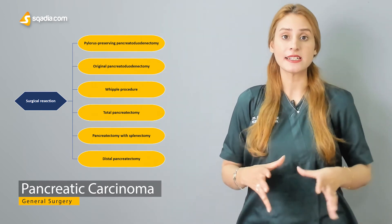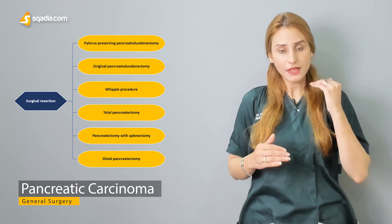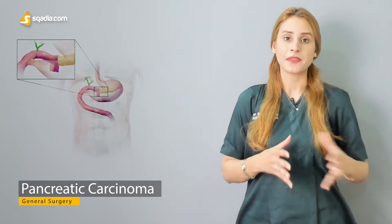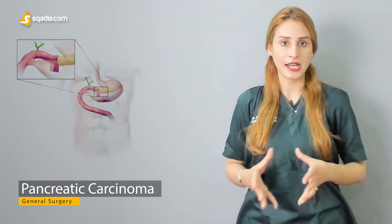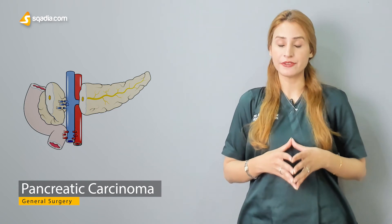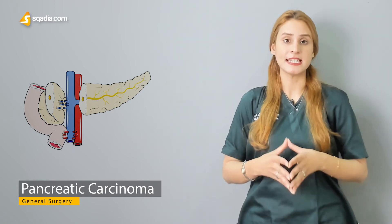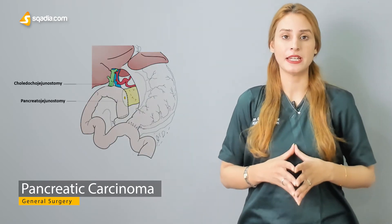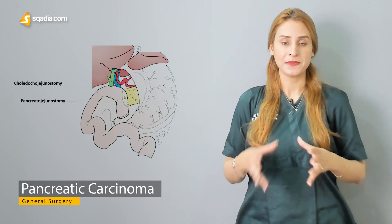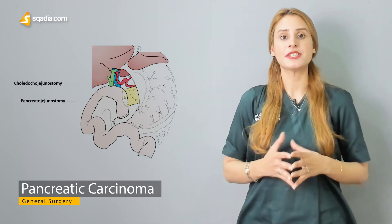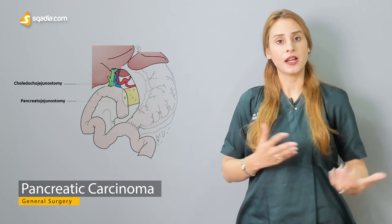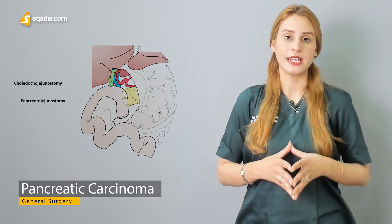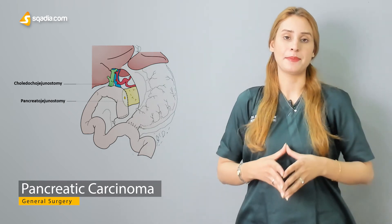Depending upon the resectability of the tumor, we'll cover the surgical options for resection, including the pancreaticoduodenectomy, the pyloric-preserving pancreaticoduodenectomy, total pancreatectomy, and the Whipple procedure. We'll also discuss what the difference is between the pyloric-preserving pancreaticoduodenectomy and the Whipple procedure.